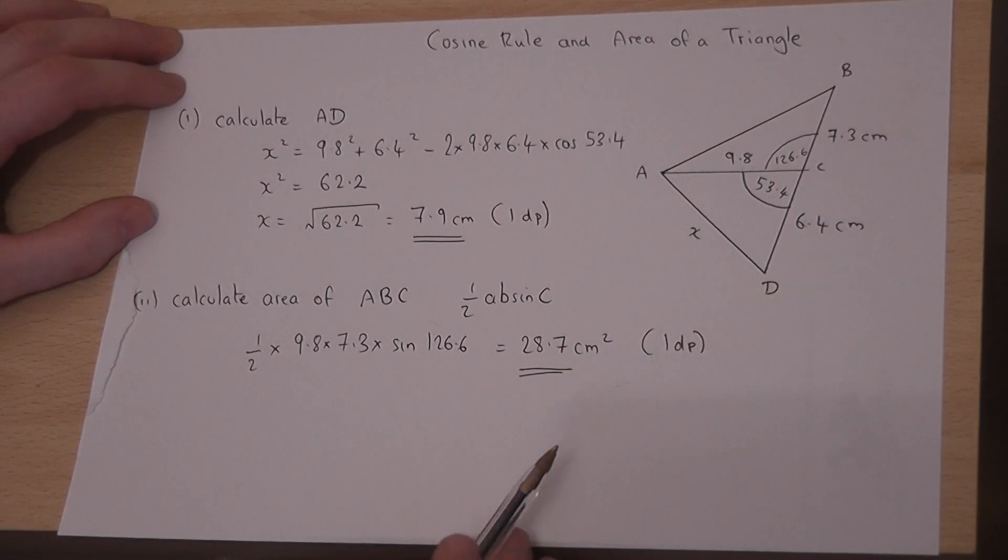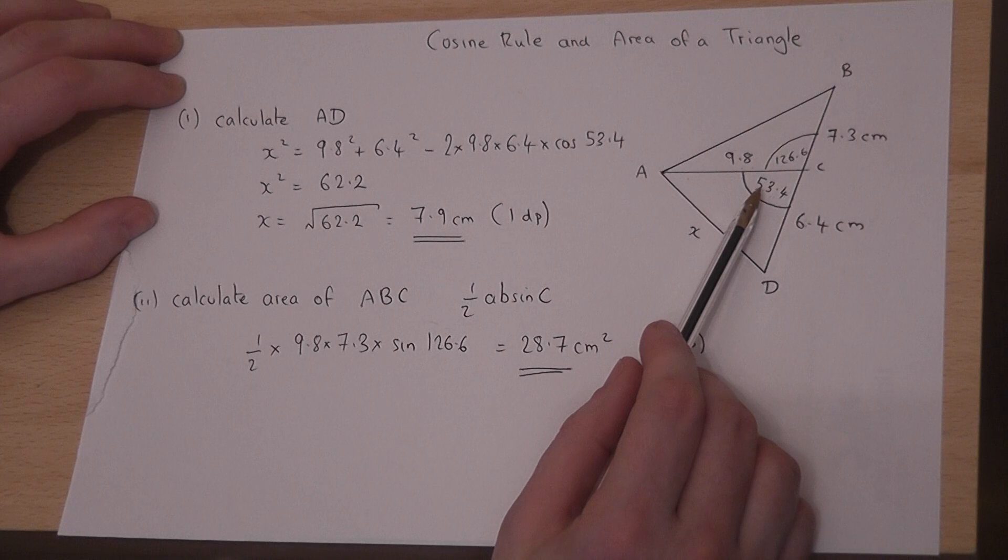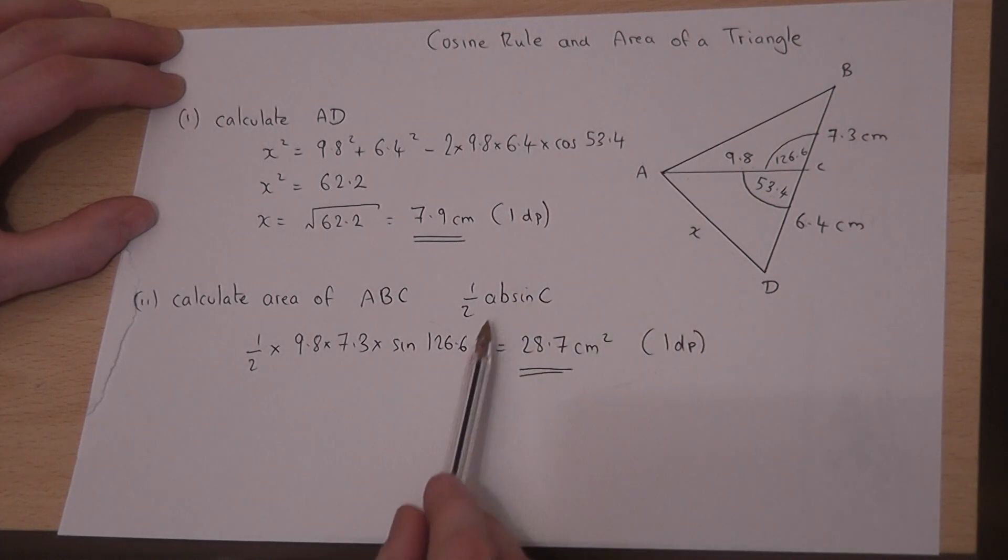Just one comment to make on an A-level paper. These are given in degrees, so make sure that you use your calculator in degree mode. On some exam papers they can also be radians and the distinction is quite important.